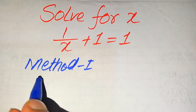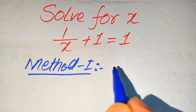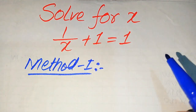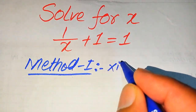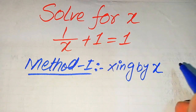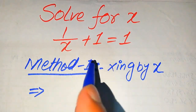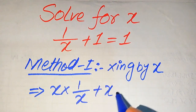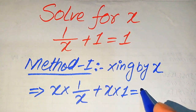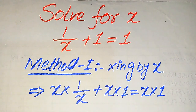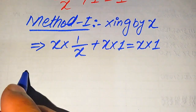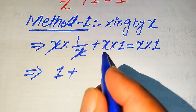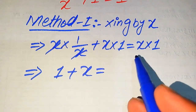In the first method, we find all the roots. To remove the fraction sign, we multiply both sides by x. When we multiply both sides by x, it becomes x multiplied by 1 over x, plus x multiplied by 1, equals x multiplied by 1. The x cancels out, and we get 1 plus x equals x.